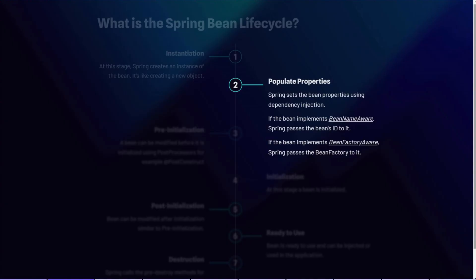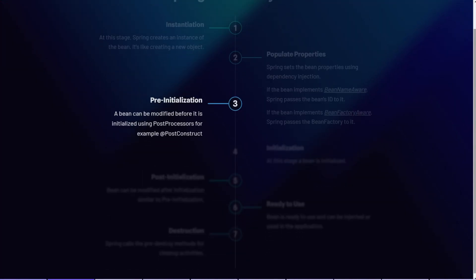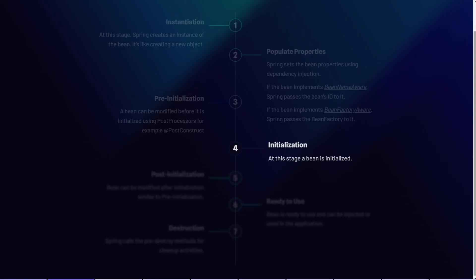This allows the bean to interact with the container and access other beans. The next step is pre-initialization — a bean can be modified before it is initialized. That can be done using post processors like the @PostConstruct annotation. The next step is initialization, where the bean is prepared for use.